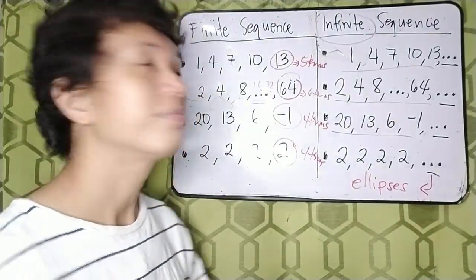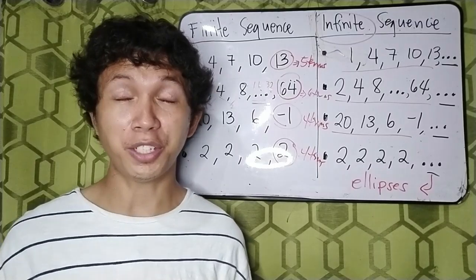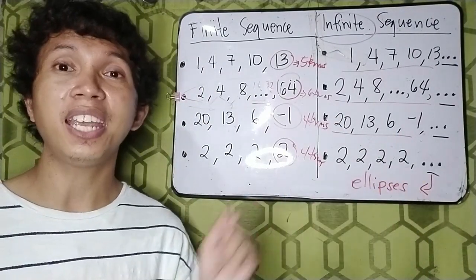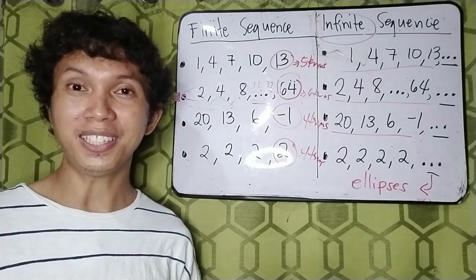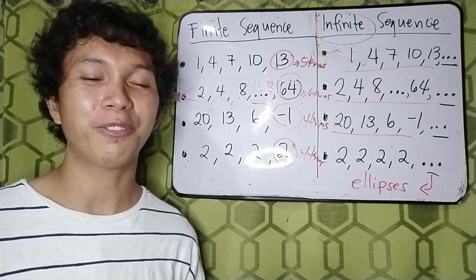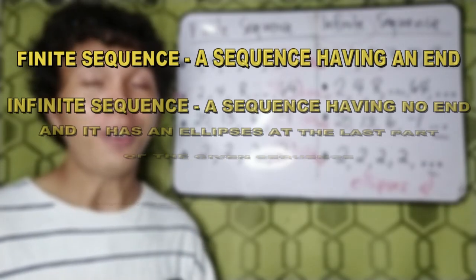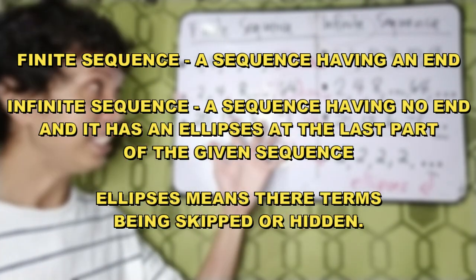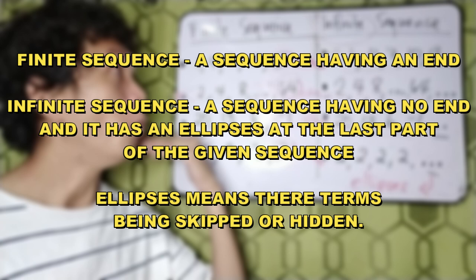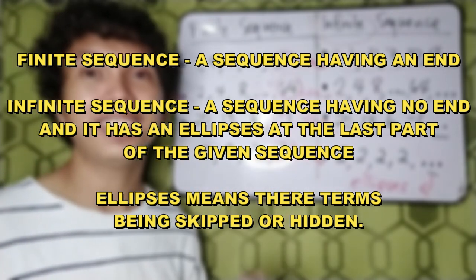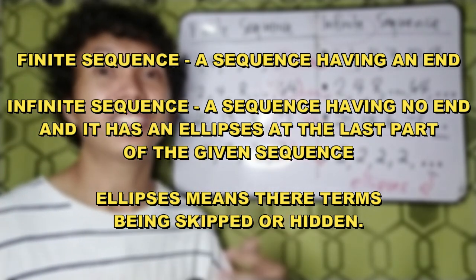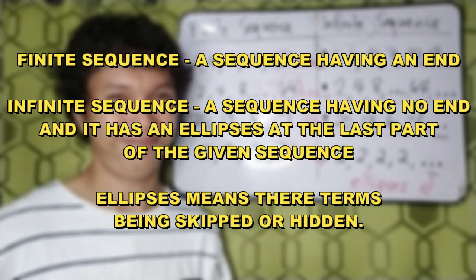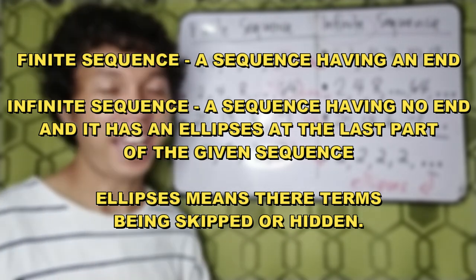So, can you answer another question? What is the difference between finite sequence and infinite sequence? Okay, very good. So finite sequence is a sequence having an end, while infinite sequence is a sequence that does not end. It has forever.